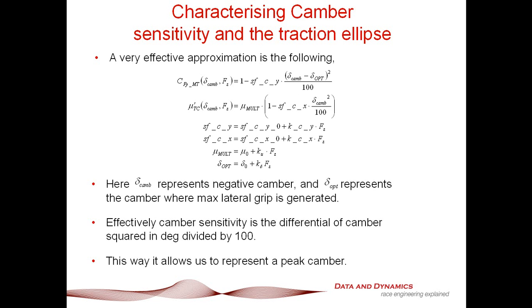In terms of the longitudinal multiplier, we have mu multiplied by 1 minus SFCX times delta camber squared on 100. What that equation represents is that your optimum longitudinal grip will stand when the tire is standing straight up at 0 degrees.